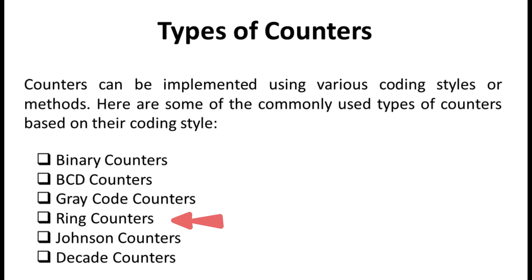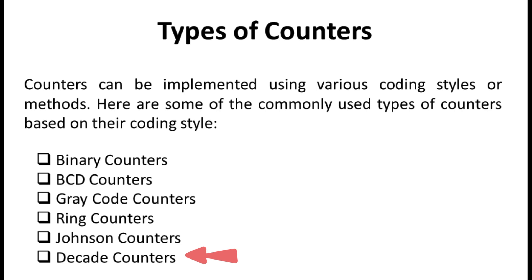Gray code counters count in gray code manner. Ring counters are the simplest example of a shift register — the ring counter contains only one logical one or zero which circulates, and the total cycle length is equal to the number of stages. It is useful in applications where the count has to be recognized to perform some other logical operation. The Johnson counter is a modified ring counter in which the output from the last flip-flop is inverted and fed back as input to the first; it is also called an inverse feedback counter or twisted ring counter.